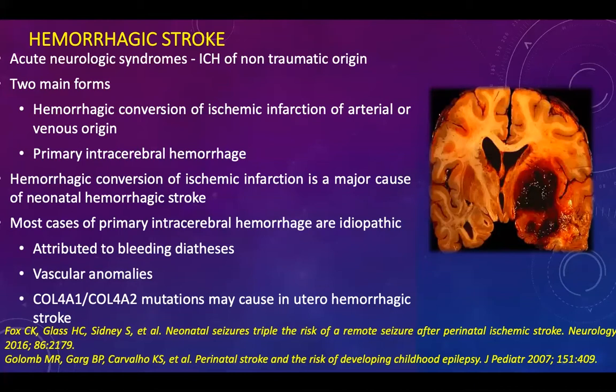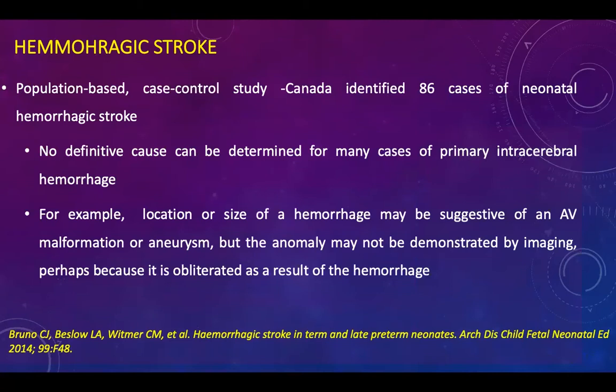Hemorrhagic stroke is an acute neurological syndrome with two main forms: hemorrhagic conversion of ischemic infarction of arterial or venous origin, and primary intracerebral hemorrhage. Hemorrhagic conversion of ischemic infarction is a major cause of neonatal hemorrhagic stroke, and most causes of primary intracerebral hemorrhage are idiopathic, though they can be attributed to bleeding diathesis, vascular anomalies, or certain mutations may lead to in-utero hemorrhage.